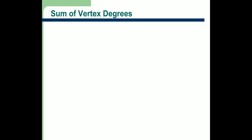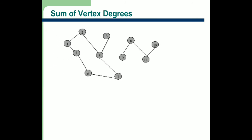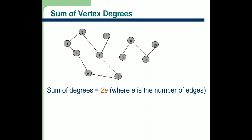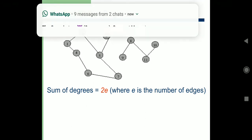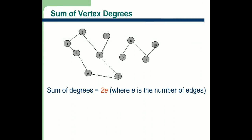Now, what is the sum of vertex degrees? The sum of degree is twice of e, where e is the number of edges. Because when there is a single edge between two nodes, say 1 and 2, it counts towards the degree of 1 as well as the degree of 2. So the sum of degrees is always twice the number of edges.